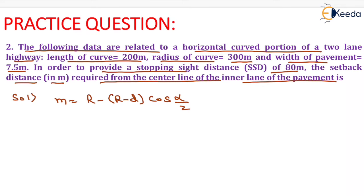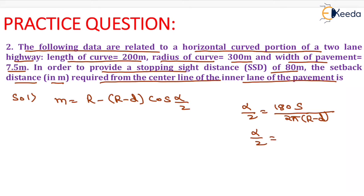For solving this, we need the value of alpha/2, which equals 180 × S divided by (2π × (R − d)). Now substituting values, alpha/2 equals 180 × 80 divided by 2π × (300 minus 7.5/4).